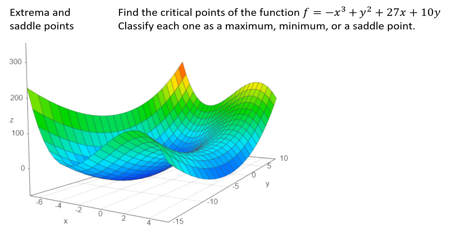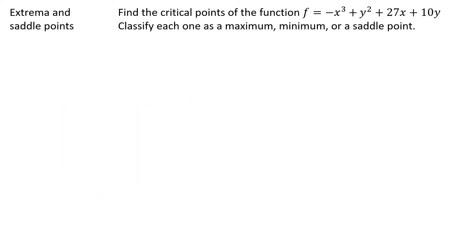In order to find these things, we have to start by taking the partial derivatives with respect to x and y and setting them equal to zero and solving that system. Because it turns out anywhere that the function is flat, the derivative in the x direction and the derivative in the y direction are both going to be zero. So solving the system will find those points for us.